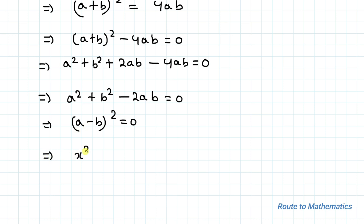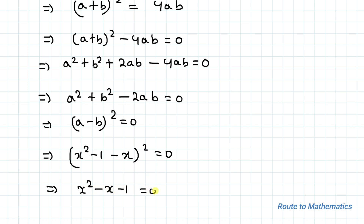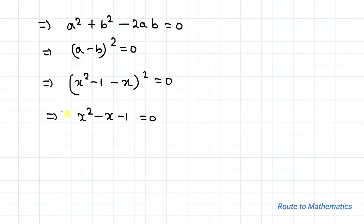Substituting a and b back, we have (x²−1−x)² equals 0, which implies x²−x−1 equals 0. So we have arrived at a quadratic equation.